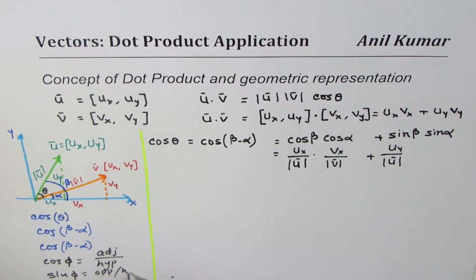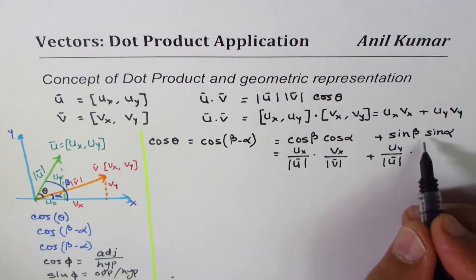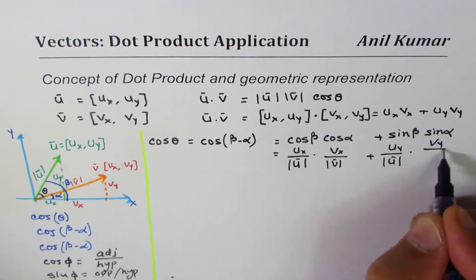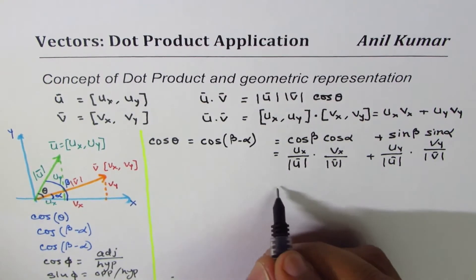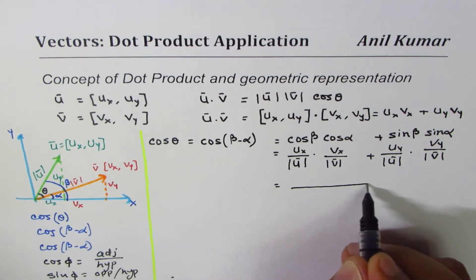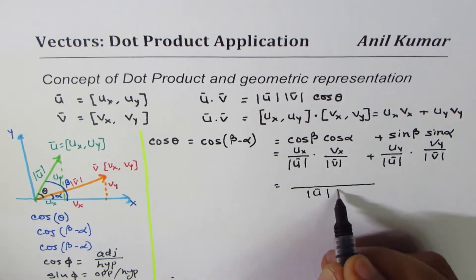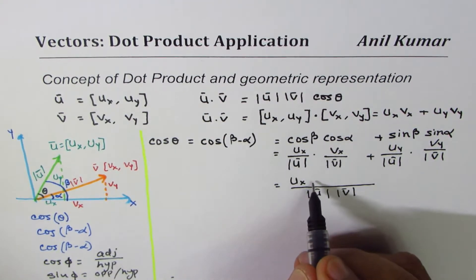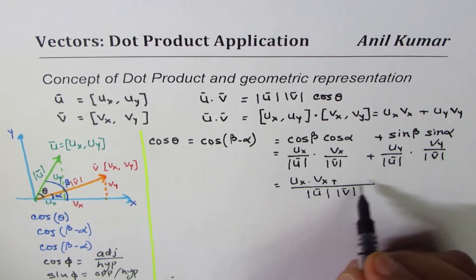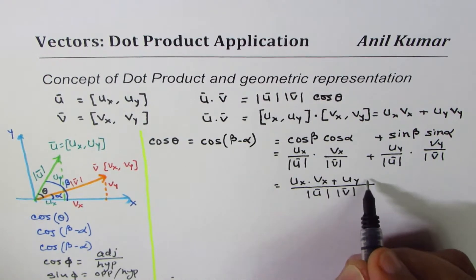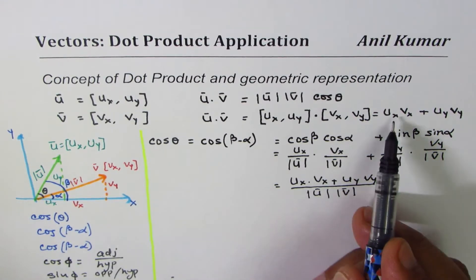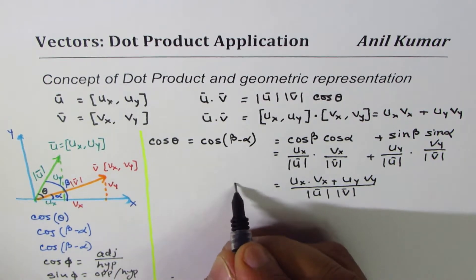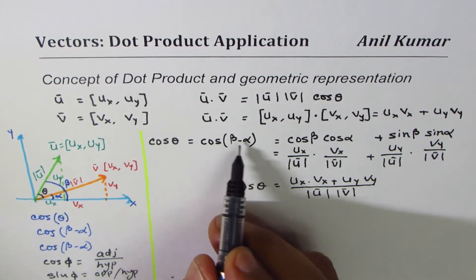Sine is opposite over hypotenuse, so sin alpha will be opposite to alpha, which is vy, over the magnitude of vector v. Now substituting all these in, we have a common denominator of magnitude of u times magnitude of v, and the numerator becomes ux*vx plus uy*vy.